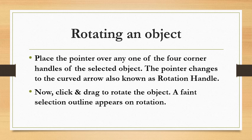Here, rotating an object. Yahan hum dekhenge ki ek object ko rotate kaise karte hain. Iske liye sabse pehle hum mouse pointer ko object ki charon corners mein se kisi ek corner par le jaate hain. Aisa karne se mouse pointer jo hota hai wo curved arrow — jisko hum rotation handle bhi bolte hain — usme convert ho jaata hai. Phir hum us par click karte hue drag karenge aur object ko rotate kar sakte hain. Jab hum object ko rotate karte hain to hume ek phantom, yaani dhundhli outline show hogi.